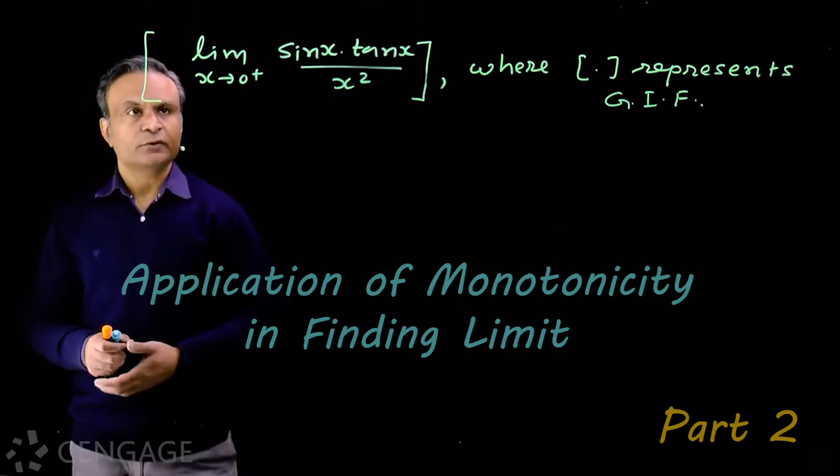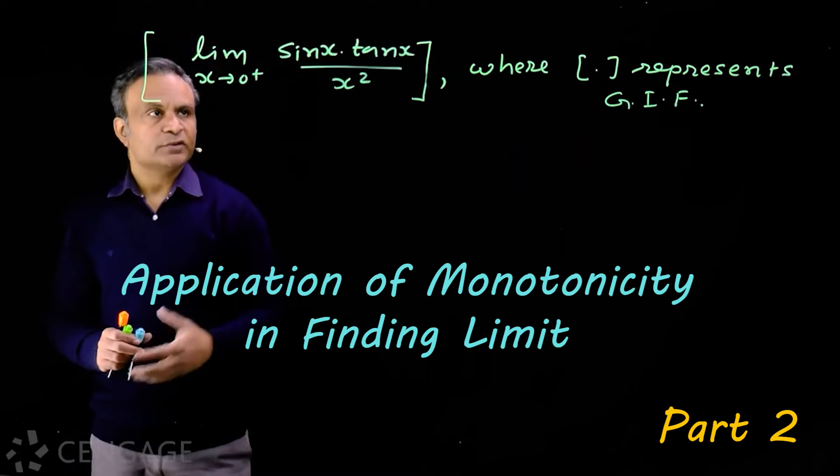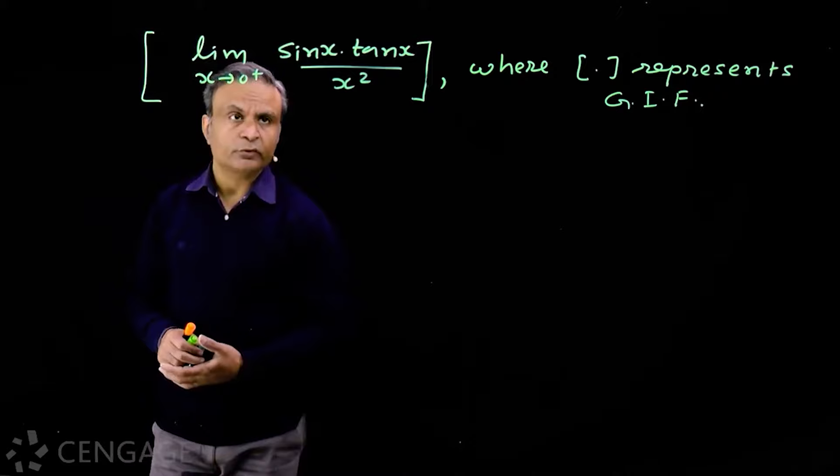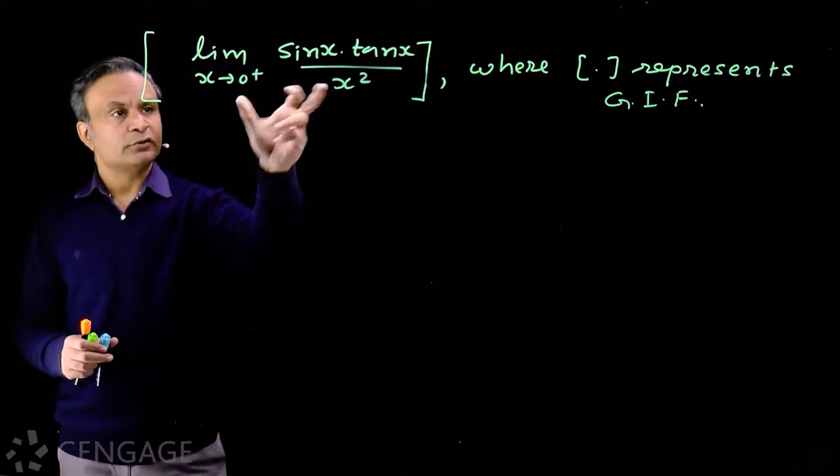Okay, now let's find this value. We have limit x tends to 0 plus of sin x multiply by tan x over x square. We have to find the greatest integer less than or equal to this limit.